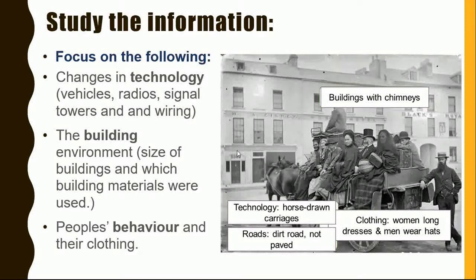In this picture you will see buildings with chimneys. An example of technology is the horse-drawn carriages. The clothing: the women wear long dresses and men wear hats. The roads are dirt and not paved.